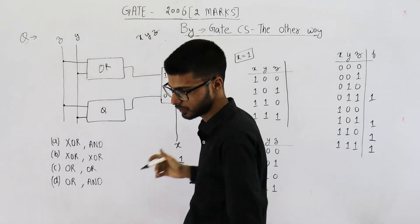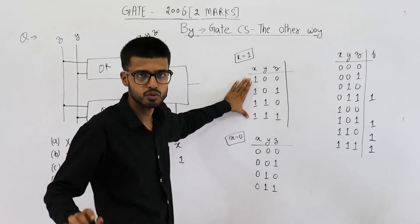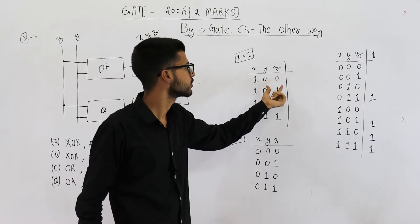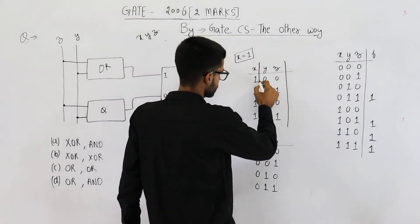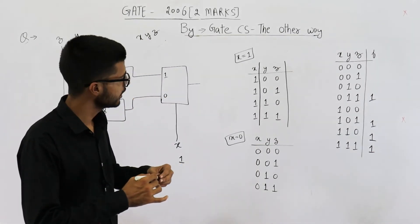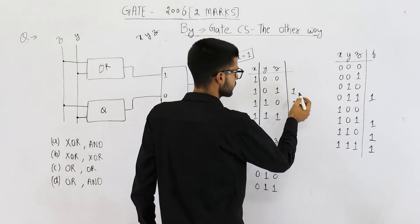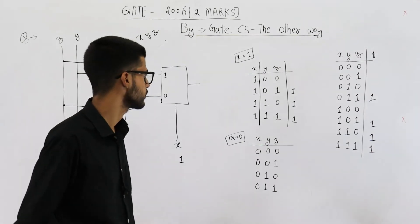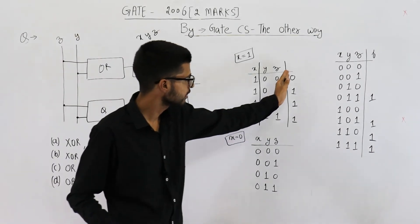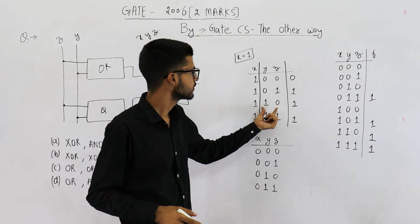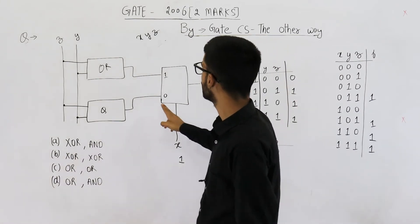We can verify this using the truth table. With X fixed to one, the possible values of Y and Z are: 00, 01, 10, and 11. In three of these four cases — 01, 10, and 11 — the output must be one, since the majority of inputs are one. Only when Y and Z are both zero is the output zero. This matches Y OR Z, confirming that P is an OR gate.